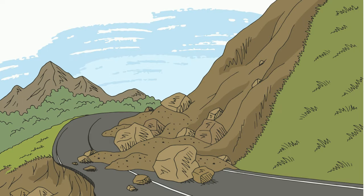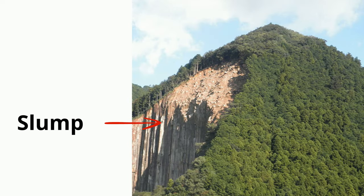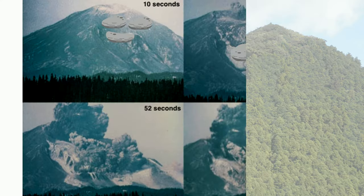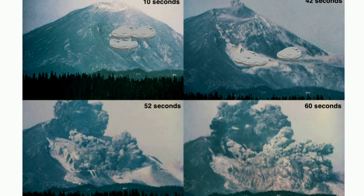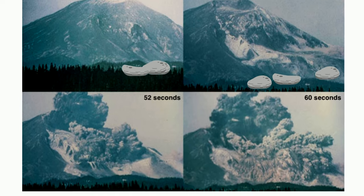A landslide is the sudden and rapid movement of a large amount of material downward. A slump is the most common landslide and happens when a block of material moves downward over a curved surface. Heavy rains, deforestation, and earthquakes increase the chances of a landslide. An earthquake triggered the Mount St. Helens landslide.